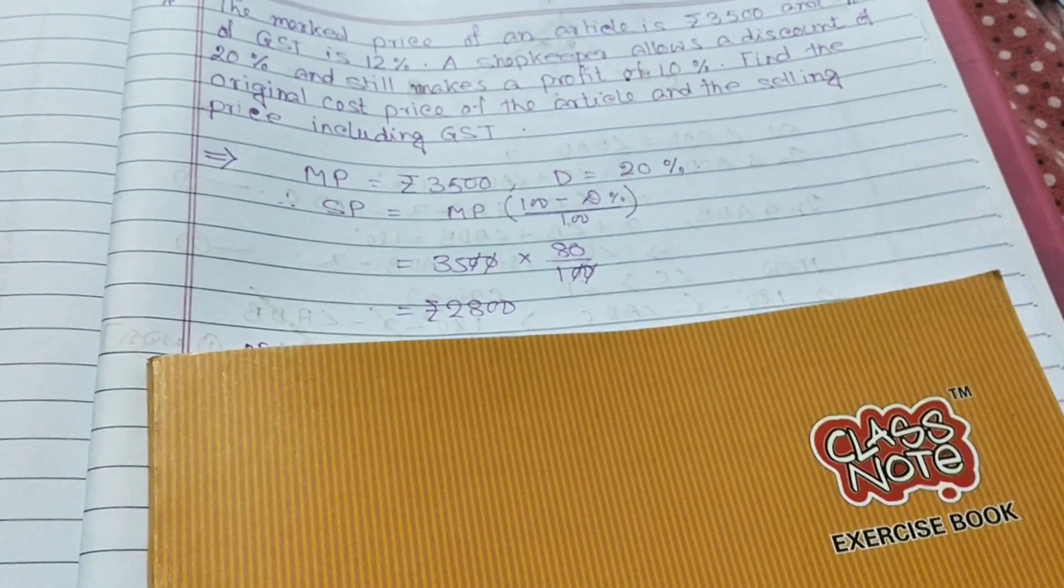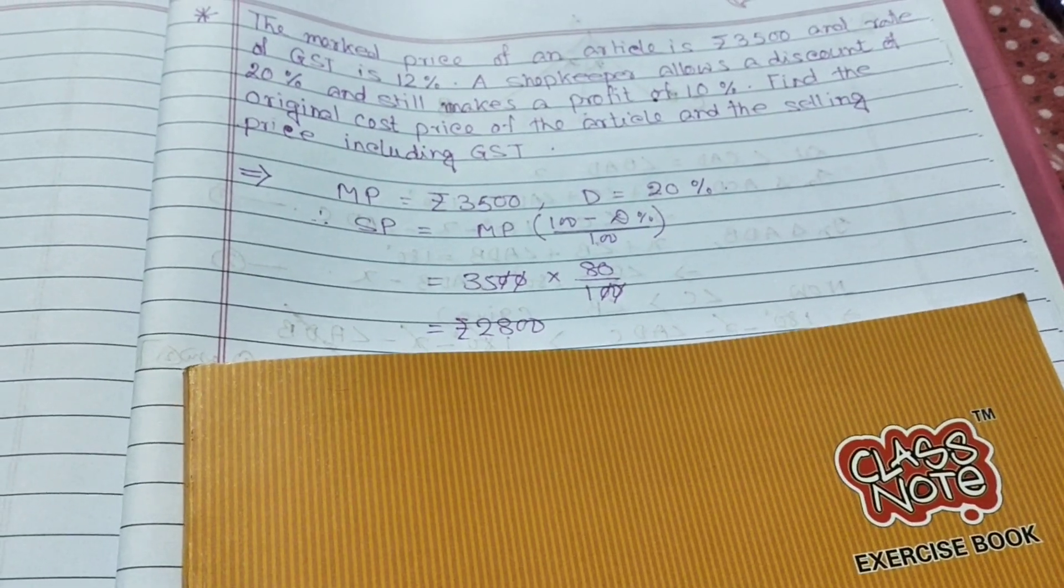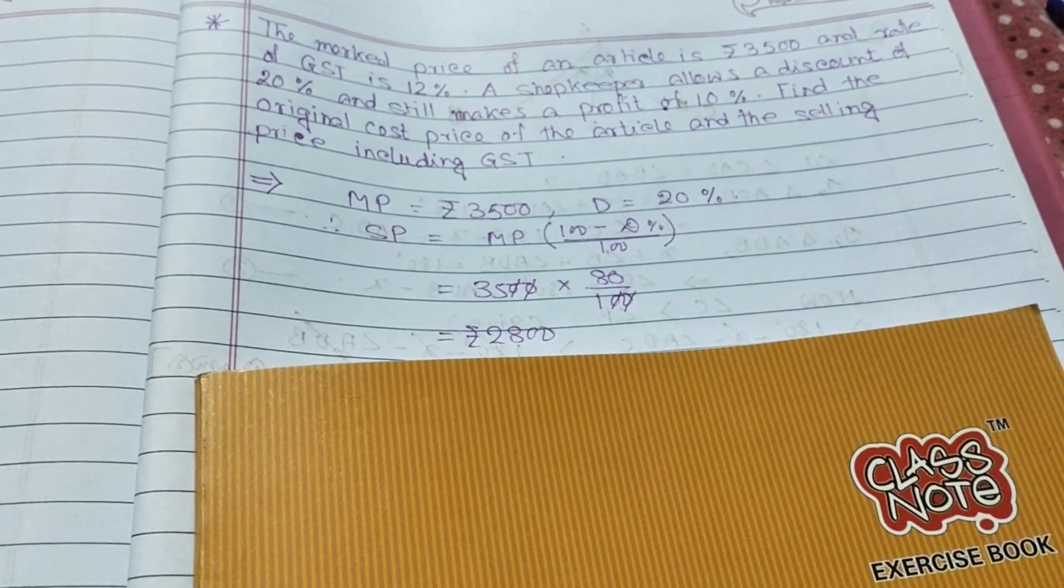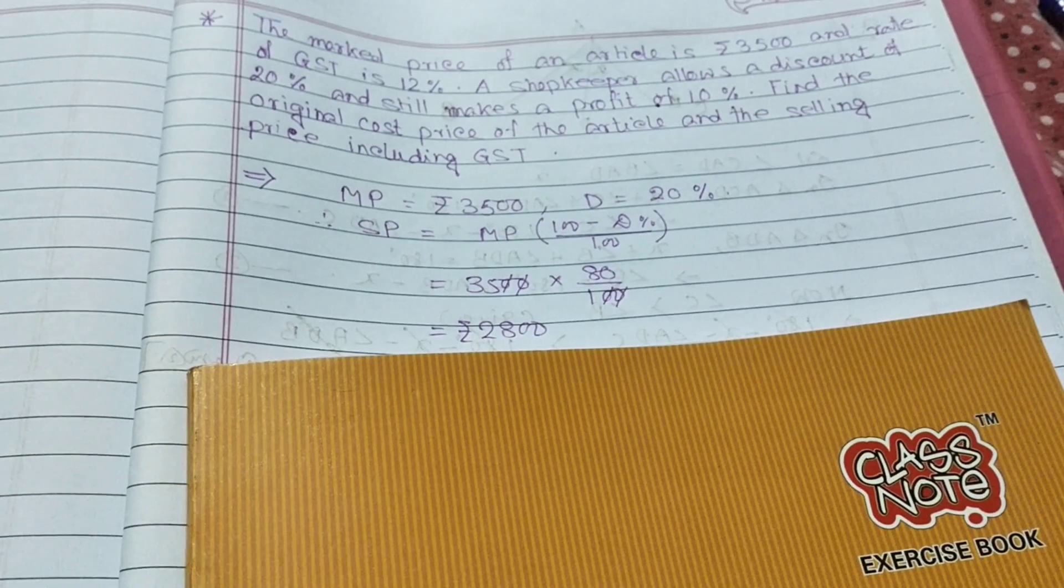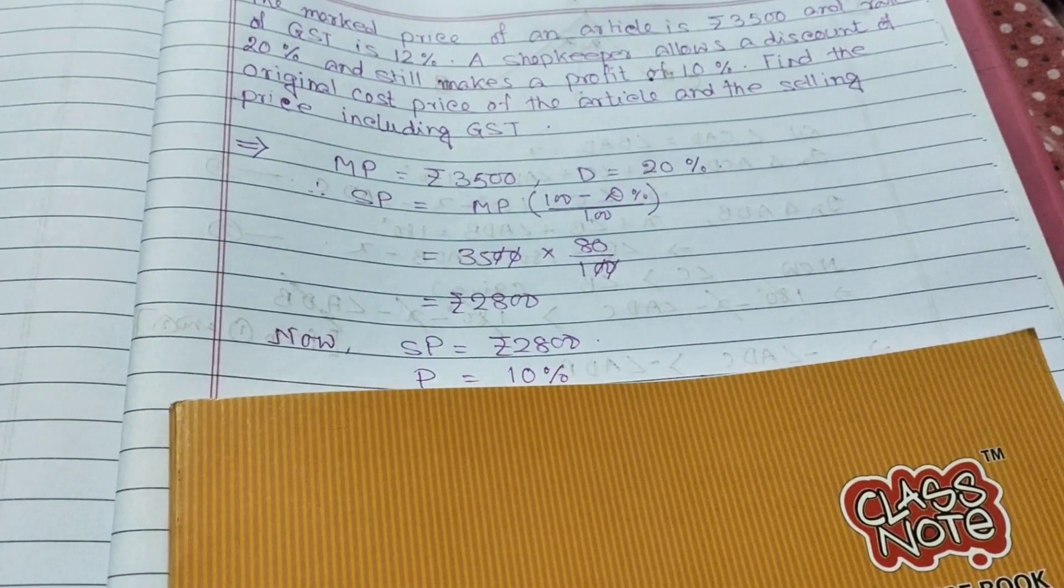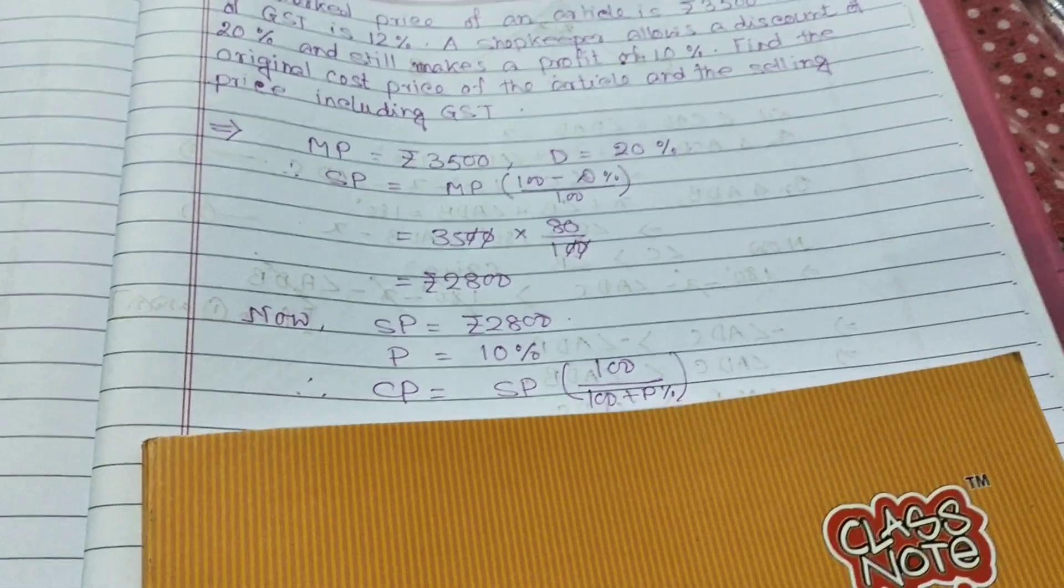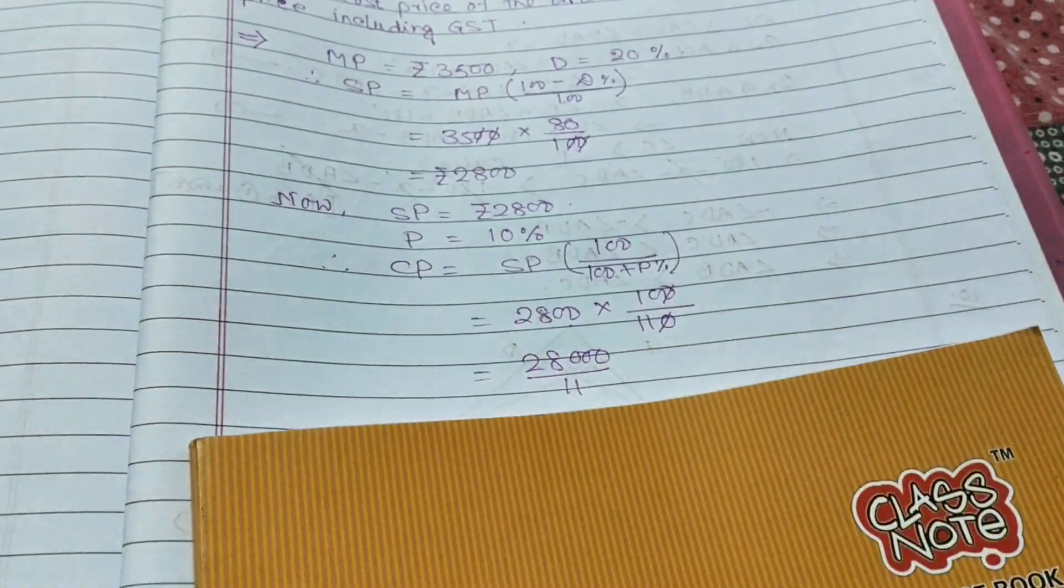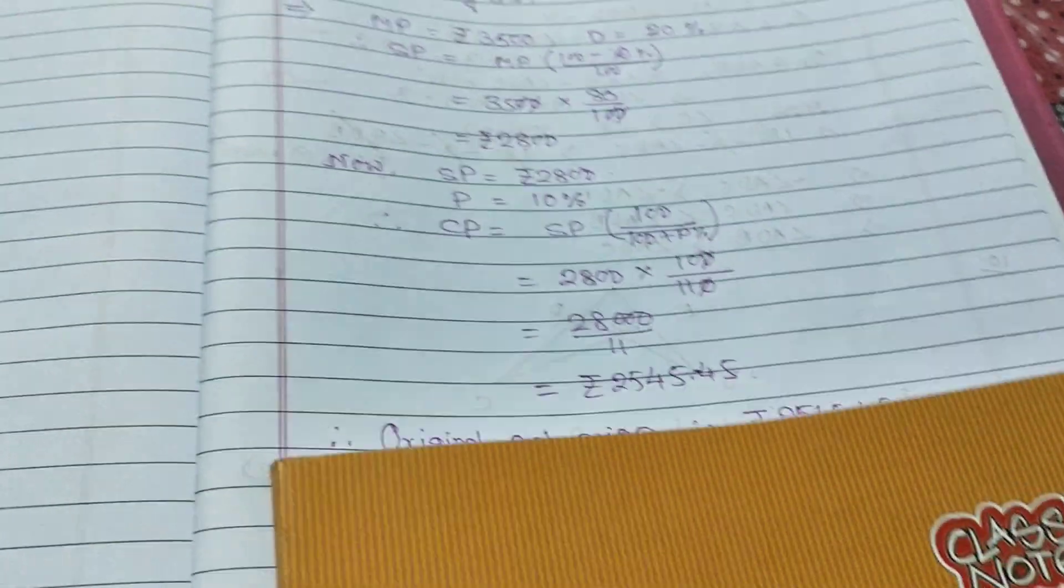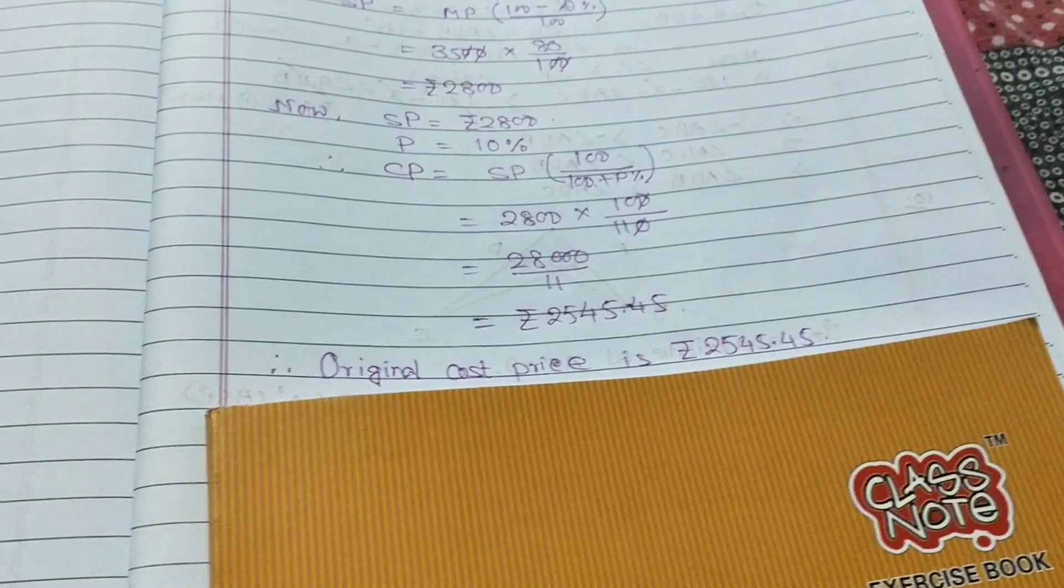Now original cost price will be calculated on the original SP not SP including GST. So SP is Rs 2800, profit is 10%. Therefore CP equal to Rs 2545.45. That is, original cost price is Rs 2545.45.